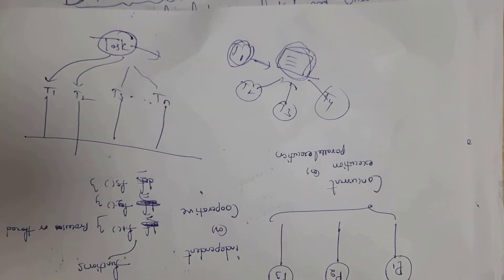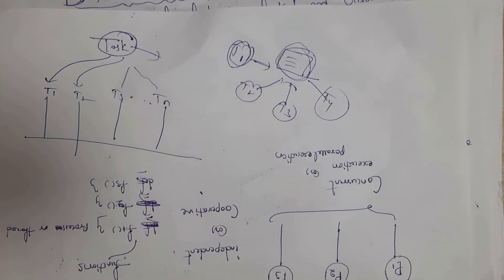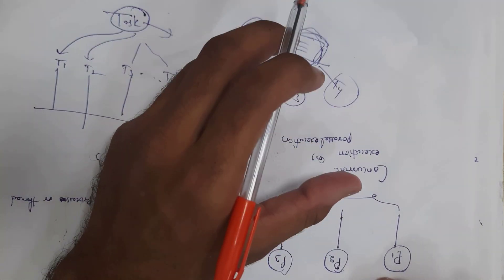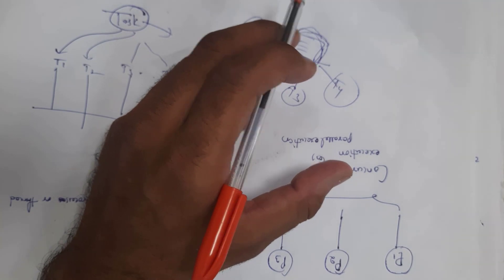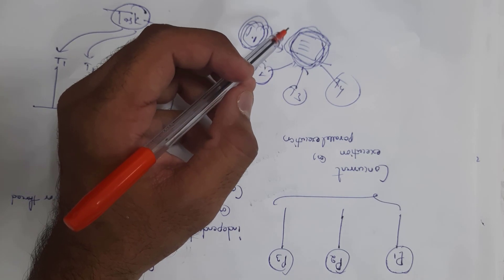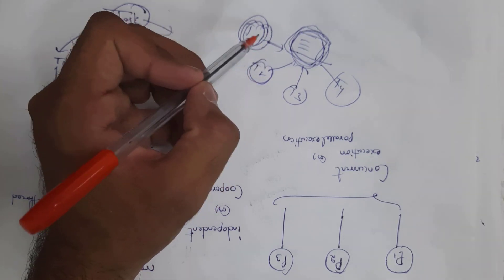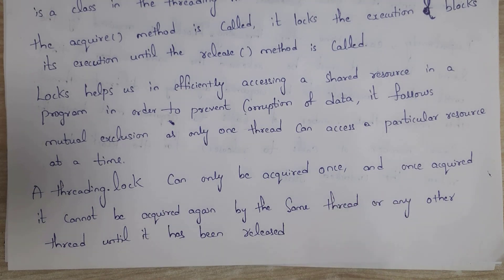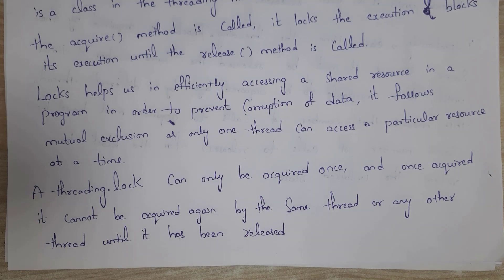For example, there are four threads T1, T2, T3, and T4. All these four threads want to access the same shared resource at the same time. Whenever all four threads access the same data at the same time, there is a chance for corruption of data, which may destroy the data. In order to overcome this problem, we use lock, so that only one thread can access the shared resource at a time. The threading module contains both Lock and RLock.